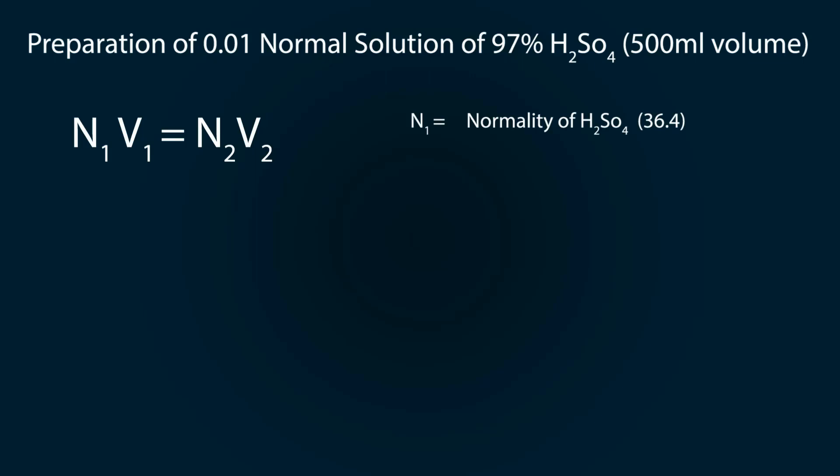In this formula, N1 indicates the normality of H2SO4 of 97% that we calculated in our previous calculation, which concluded as 36.4, and N2 is the normality of required solution, which is 0.01 normal.